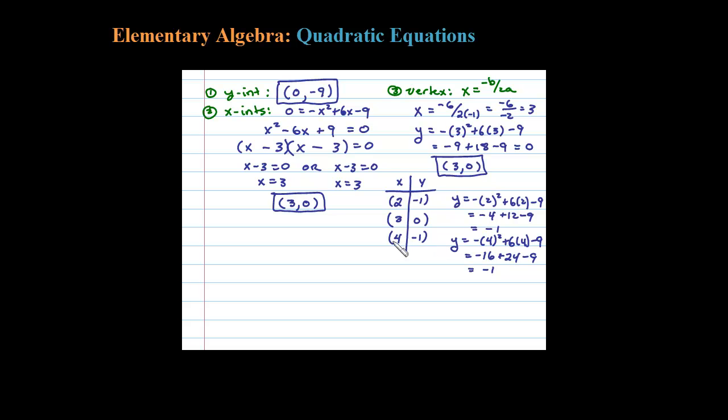Now I think we're ready to graph this. We have the y-intercept, we have the x-intercept and the vertex, and a couple other points. So let me draw in a Cartesian coordinate system. Now let's put some dots: 0 comma negative 9, 3 comma 0 is my x-intercept and vertex, 2 comma negative 1.